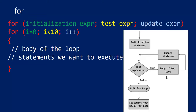If the test expression is true, then the body of the loop is going to be executed. If i is less than 10, the body of the loop will execute. Then it will update the statement — here i++ is the update statement — and again it will go back to the test expression. If the test result is true again, it will execute the body of the loop again. If it is false, it will exit the loop and execute the next statement after the loop.